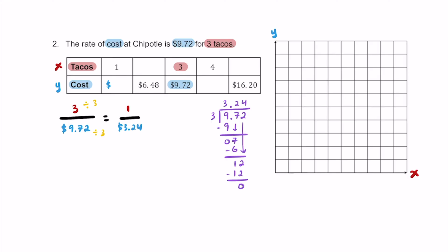We put $3.24 in the first box for one taco. For the next empty box showing $6.48 — if you double $3.24, you get that amount. So doubling one taco gives us the price of two tacos: two tacos cost $6.48.